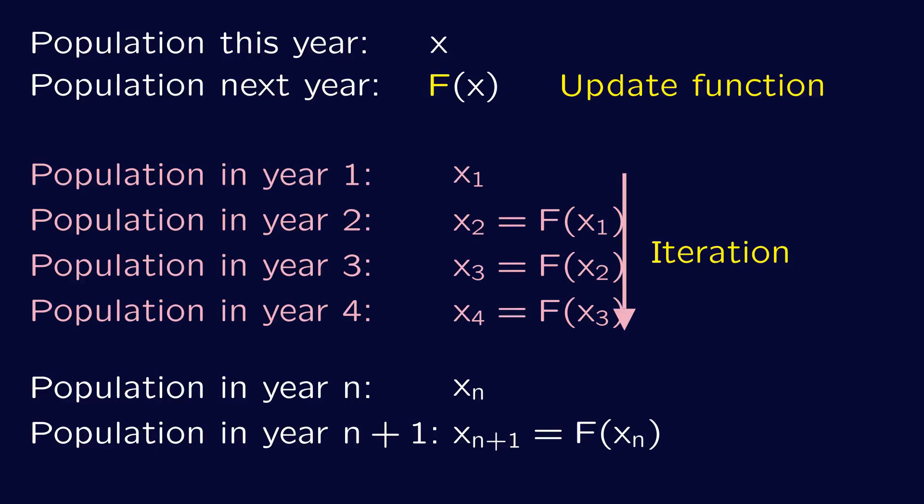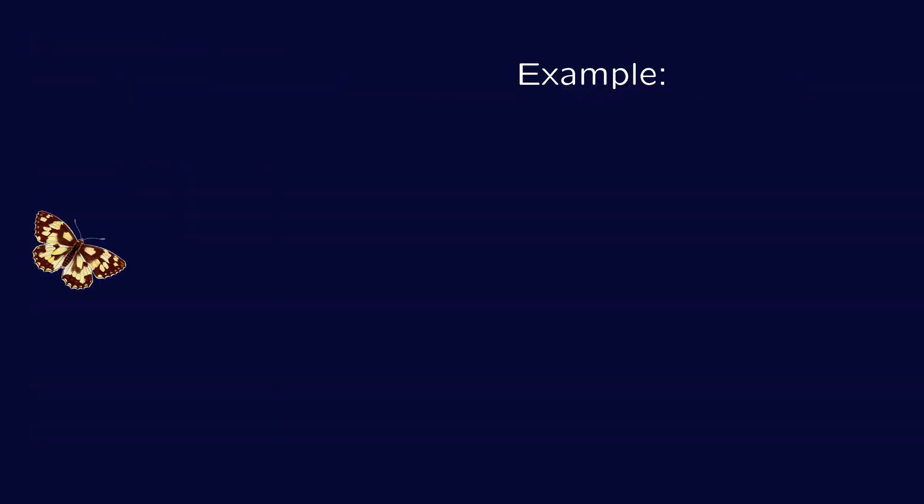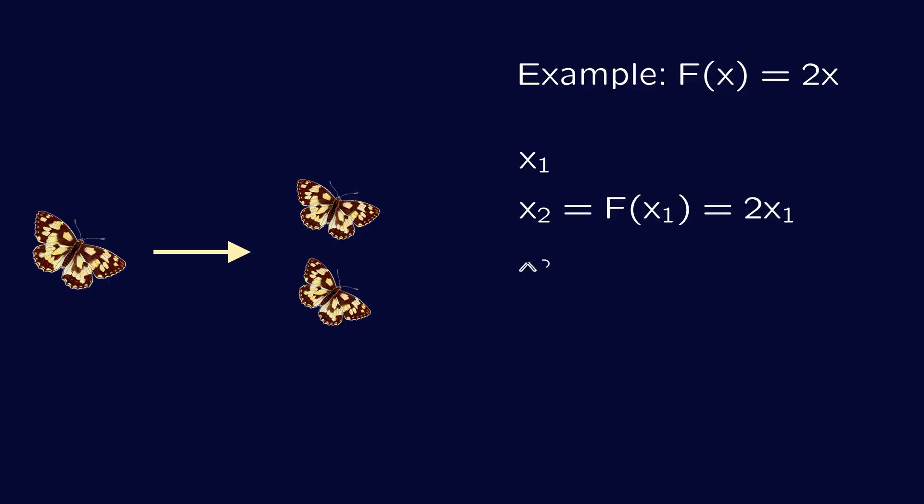For example, we could assume that for every butterfly this year, there will be two the next. Then the update function f is given by f of x equals 2x. So if the initial population the first year is x1, then the population the second year, x2, will equal 2 times x1, x3 will equal 4 times x1, x4 8 times x1, and so on.